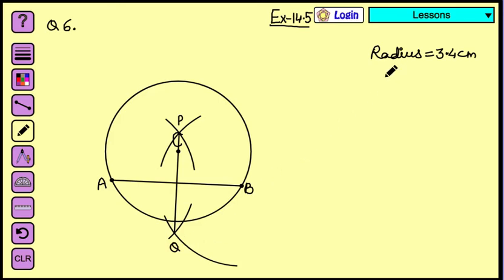We can write it down over here. That PQ is perpendicular bisector of AB.